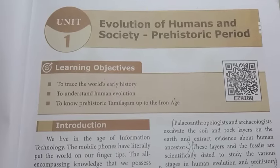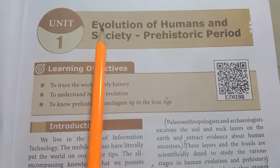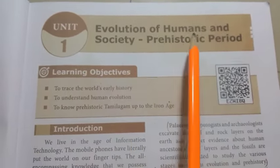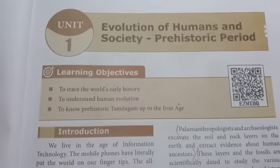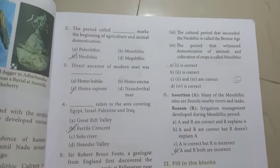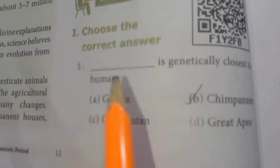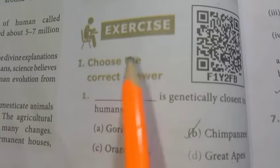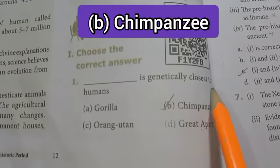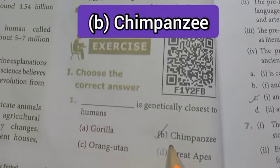In this video: 9th standard Social Science, Unit 1 - Evolution of Human Society, Prehistoric Period, Lesson 2 Exercise Class. Page 12, Roman numeral I, Choose the correct answer. First one: dash is genetically closest to humans. Answer is B, option chimpanzee.